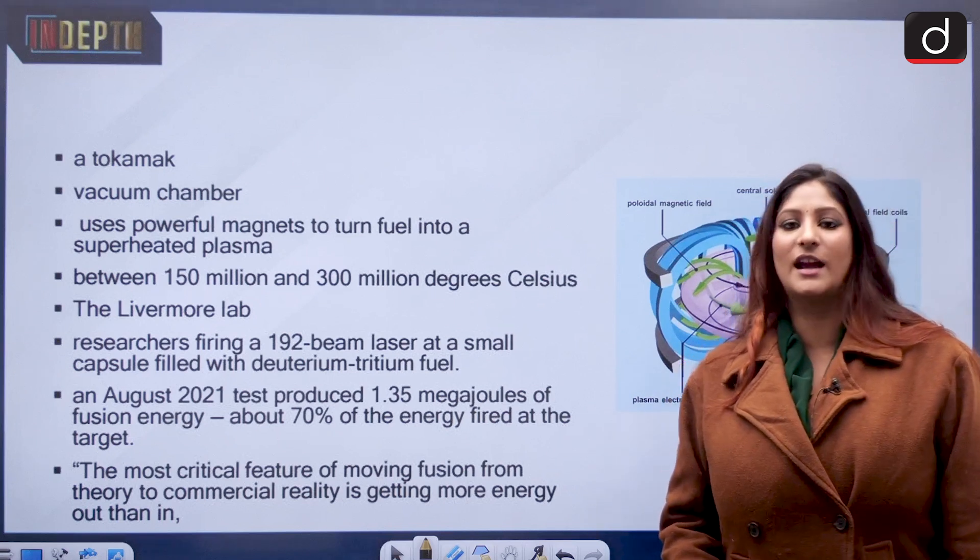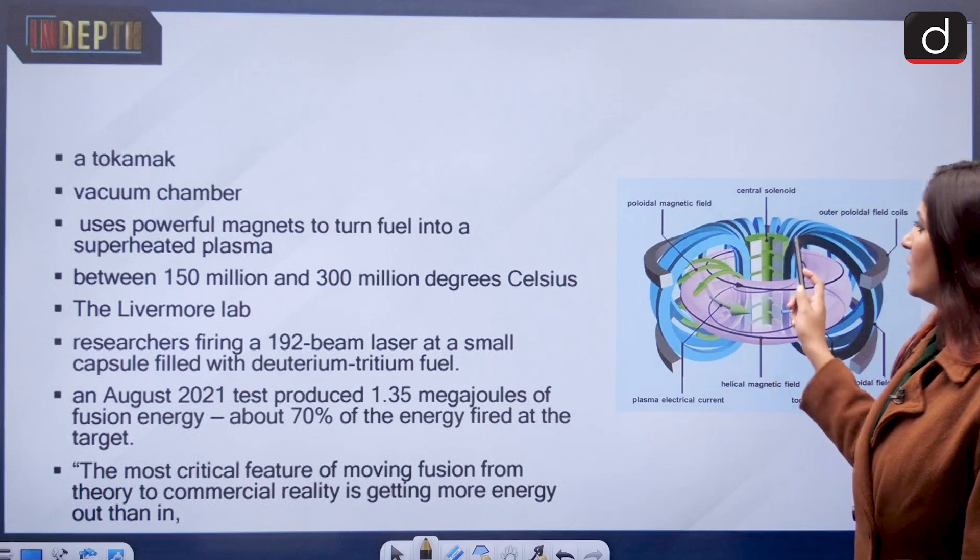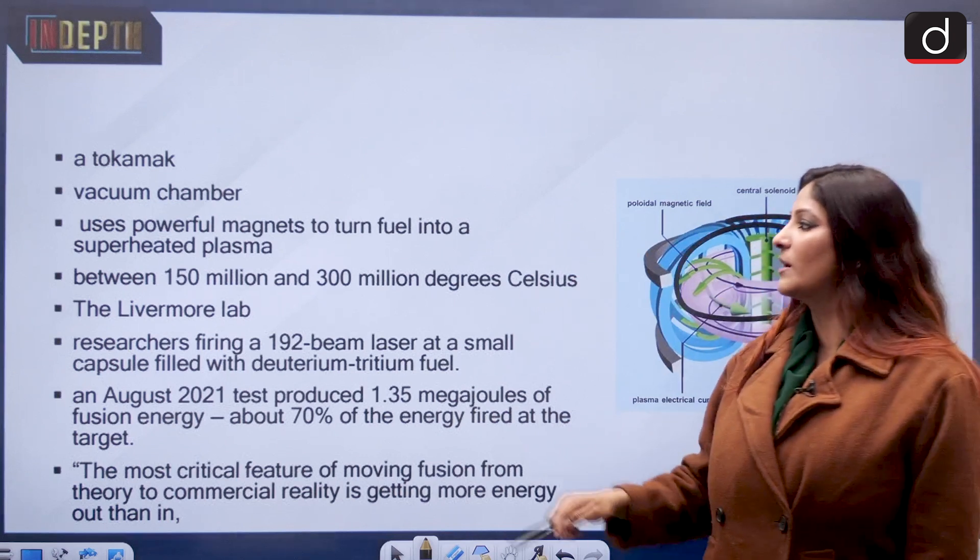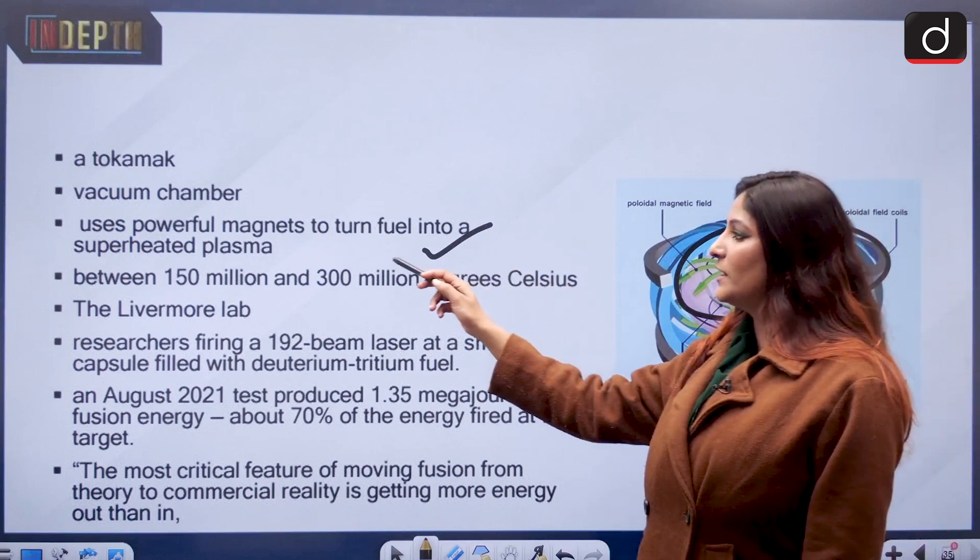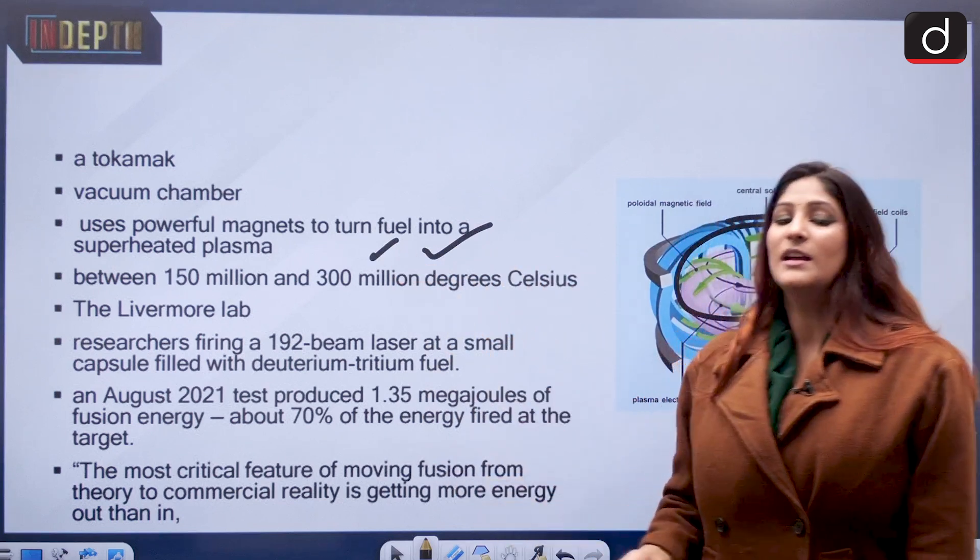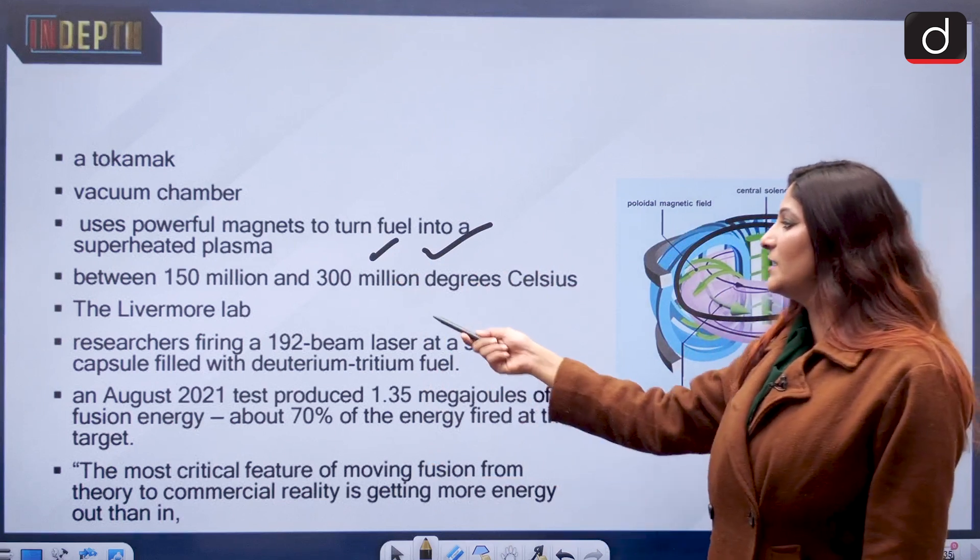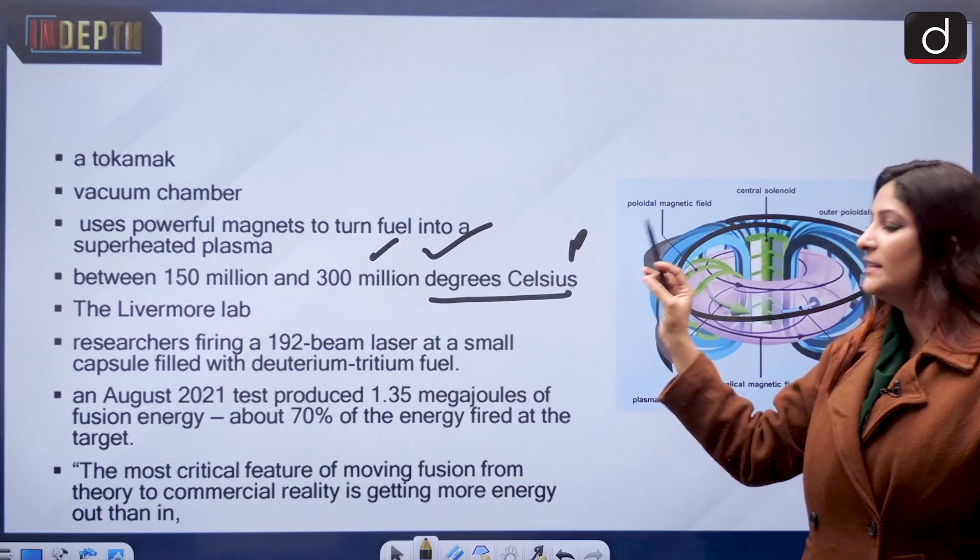Scientists are producing such fusion reactions through a tokamak, which is a donut-shaped vacuum chamber, and it uses powerful magnets to turn fuel into superheated plasma. The temperature is between 150 million and 300 million degrees Celsius, important for prelims.